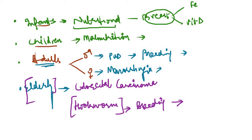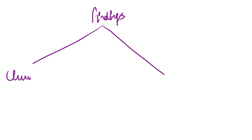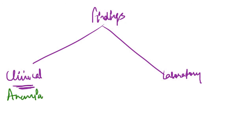So the causes of iron deficiency anemia are really age-specific: infant-specific, child-specific, adult-specific, and for the elderly. Now, the last question is what are the findings in iron deficiency anemia? Findings are of two types: clinical findings — symptoms and signs seen in the clinic — and laboratory findings from investigations. The clinical findings start with those of anemia: the patient will present with pallor, weakness, fatigue, dyspnea, lightheadedness, headache, and worsening of coronary artery disease if there was pre-existing angina.